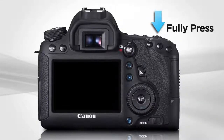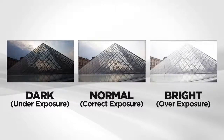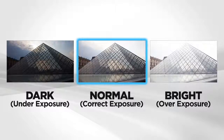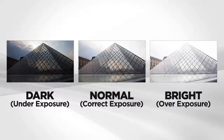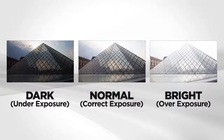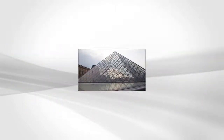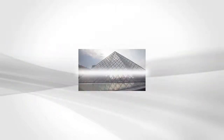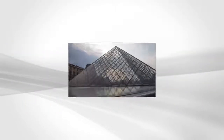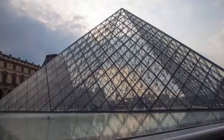Now, when you fully press the shutter button, the camera will take three consecutive images: one correctly exposed, one underexposed, and one overexposed. The images are automatically combined into one final HDR image.